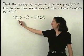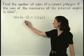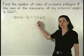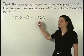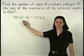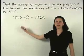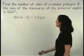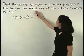So we have 180 times n minus 2 equals 1260. Remember that the n in the formula represents the number of sides of the polygon, and the original question is asking for the number of sides of the polygon.